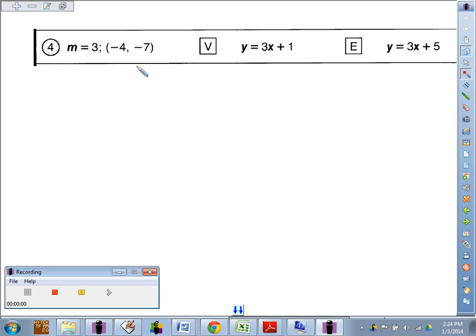Number four, we're going to find the equation of a line that has a slope of three going through the point negative four, negative seven.